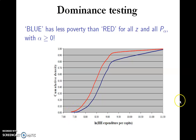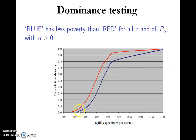What is this graph telling us? First of all, you can see that these two lines don't intersect. That means that first order dominance exists — there is stochastic dominance in this graph. At all income levels, the blue line lies below the red line.